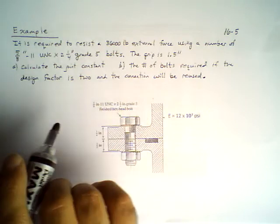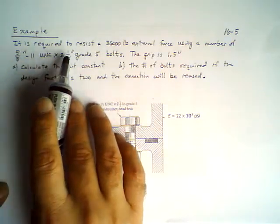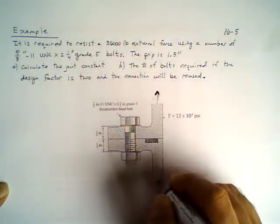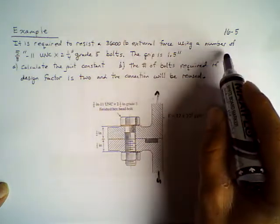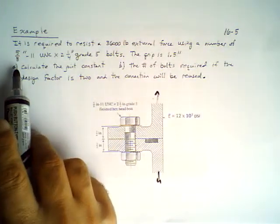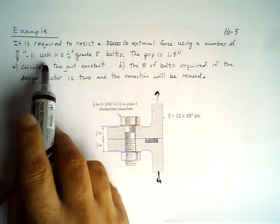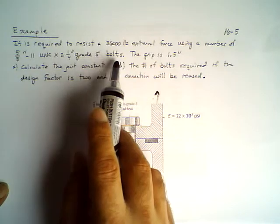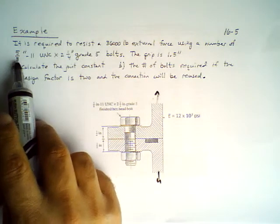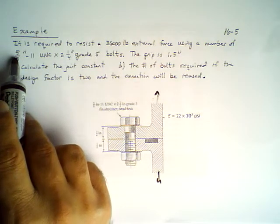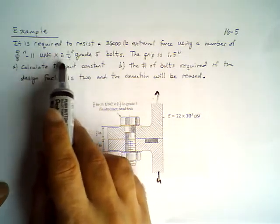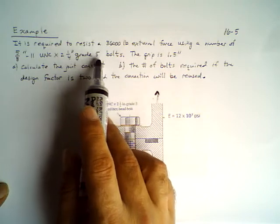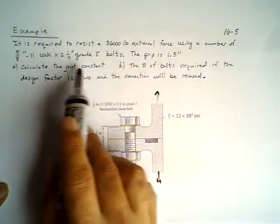It is required to resist a 36,000 pound external force, this is your P, using a number of 5/8-11 UNC 2.25 grade 5 bolts. So we have the size designation of the bolt, which tells me what At is. We don't really care about the length - it usually doesn't mean anything. Grade 5 bolt tells me the proof strength, and the grip is 1.5 inches.